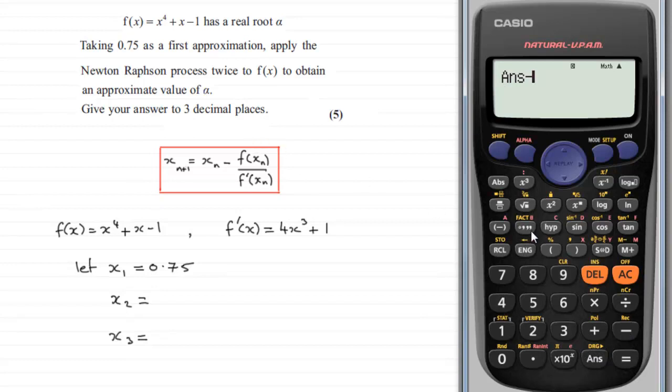So we start off with answer and then minus and then we've got this fraction here. So we'll set up a fraction and then f of x subscript n is just entered as answer to the power 4 plus answer minus 1.